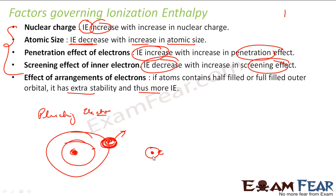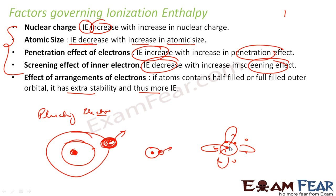For a smaller atom with less shielding, it is difficult to pluck one electron. And for a noble gas with eight electrons in the outermost shell — they are all happy and stable — it will be very difficult to pluck out electrons. So it is all about how easy or difficult it is to pluck out electrons, and that is nothing but ionization enthalpy.